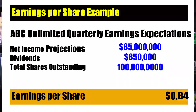Going back to the example, let's take a look at analysts' expectations of ABC Unlimited. Analysts project that ABC will earn eighty-five million dollars next quarter and they will distribute eight hundred and fifty thousand dollars in dividends. We take eighty-five million minus eight hundred and fifty thousand and divide by one hundred million shares. This equates to an expected eighty-four cents earnings per share.